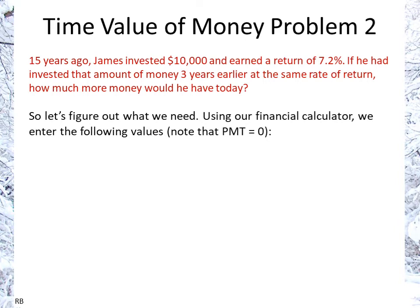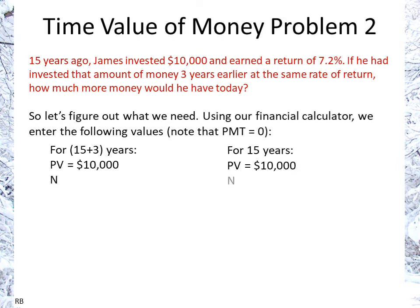Using the financial calculator, we enter the following values. The payment is zero because we're not talking about interim payments for each period. The present value, which is the initial amount invested, is $10,000 in both cases. The number of periods, which is the number of years, is 18 versus 15. The interest rate is 7.2 in both cases as well.